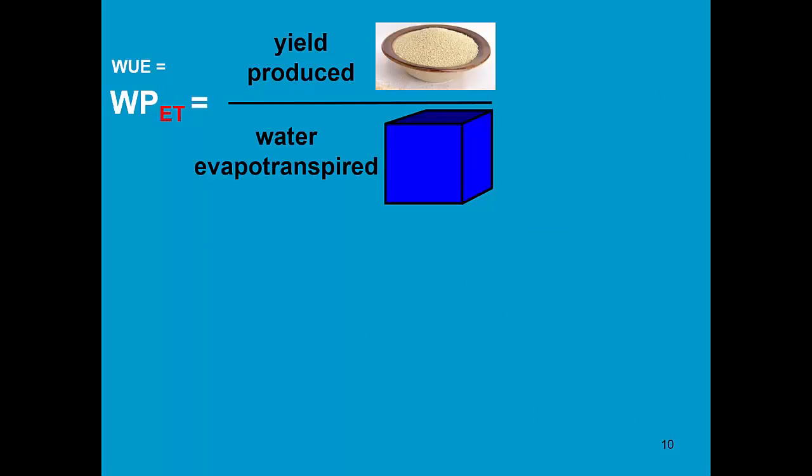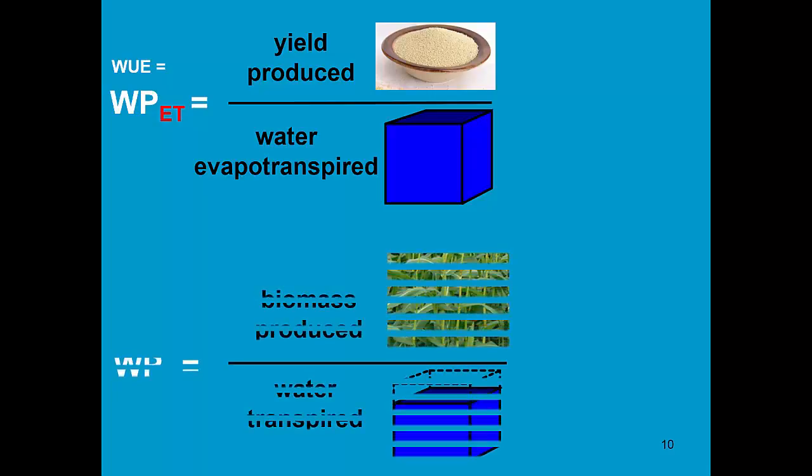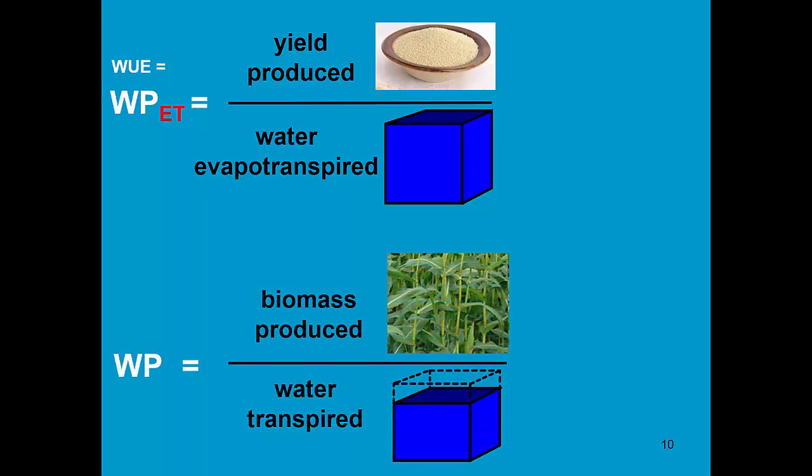On the top we have the ET water productivity and at the bottom we have the biomass water productivity. ET water productivity tells me how much kilograms of yield I got per cubic meter of water lost by ET, while the biomass water productivity is the biomass produced per cubic meter of water lost by transpiration.